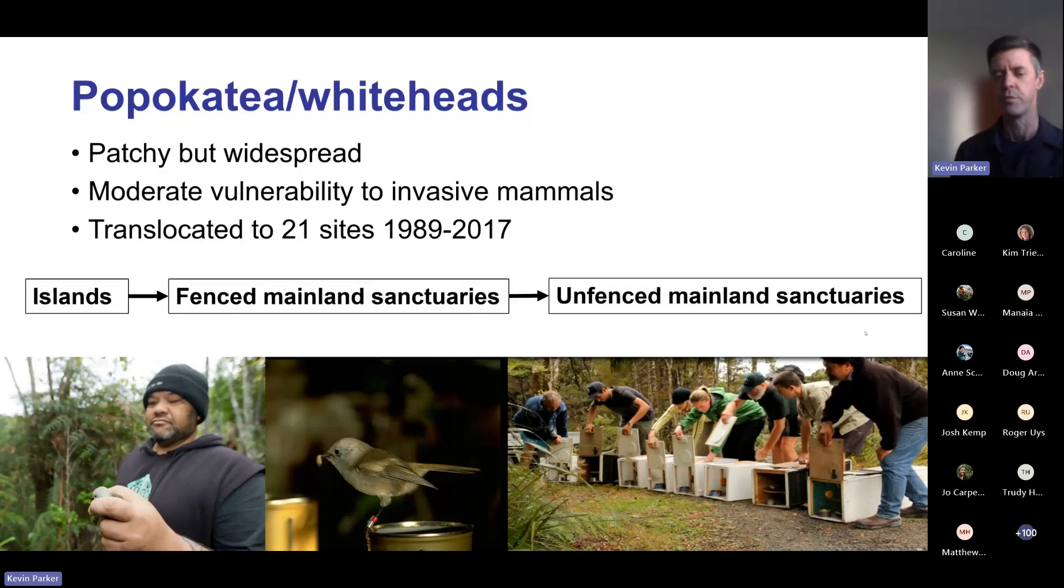They've been translocated to 21 sites over about the last 35 years. Translocations have typically been a single release of between 40 and 100 birds, although there's one site where translocation effort was much higher. Initial releases were onto islands, and more recently into fenced mainland sanctuaries - both ring fence sanctuaries and peninsula sites - and also into unfenced mainland sanctuaries.